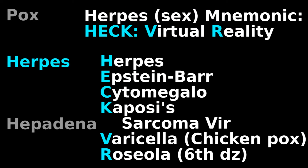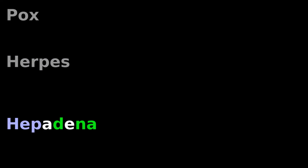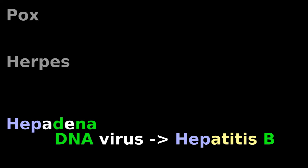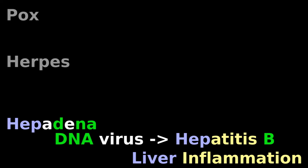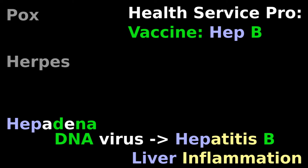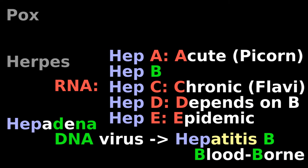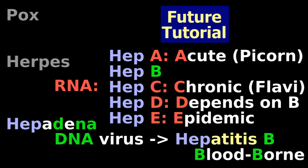There are other herpes viruses to learn. Hepadnavirus is the DNA virus that causes Hepatitis B, or liver inflammation. Since you are in the professional healthcare field, you've probably gotten vaccinated against Hep B. There are five hepatitis viruses; the other four are RNA viruses. These five hepatitises will be covered in future tutorials.